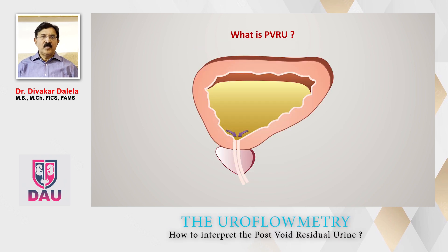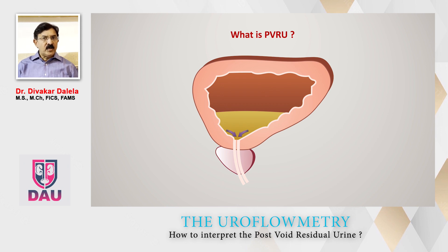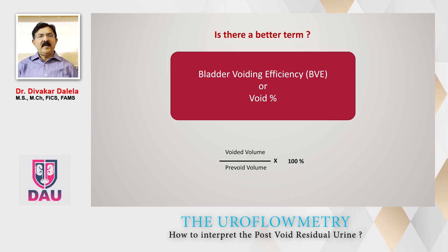What is post-void residual urinary volume? In the bladder, when it is full and when the patient voids, the bladder empties. It should empty completely. But in a variety of conditions, the bladder is not able to empty fully, and whatever is the amount of urine left behind in the bladder after the completion of the act of voiding is called post-void residual urinary volume.